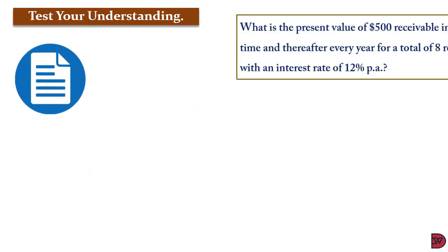So let's test our understanding. You are supposed to work the present value of $500 receivable in a year's time and thereafter every year for a total of 8 receipts with an interest of 12% per annum.